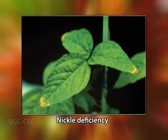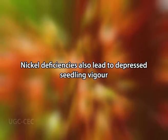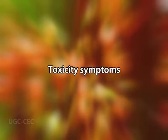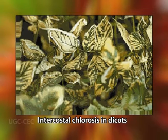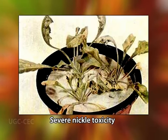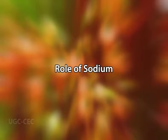Nickel-deficient plants accumulate urea in their leaves and consequently show leaf tip necrosis. Nickel deficiency also leads to depressed seedling vigor. As for toxicity symptoms, in excess nickel induces chlorosis; its symptoms in cereals are often lateral wide strips on the leaves. In dicots, it induces intercostal chlorosis. The leaves of severely damaged plants are completely yellow or white, and necrotic lesions advance from the leaf margins. Plants die if the excess persists.